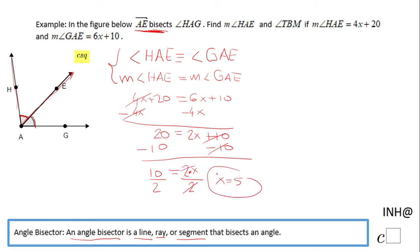Now let's see what the problem asks us. Find the measure of angle HAE. So we have to do one more thing to solve this problem. Find the measure of angle HAE. If you remember, the expression for this angle was 4x plus 20, right?